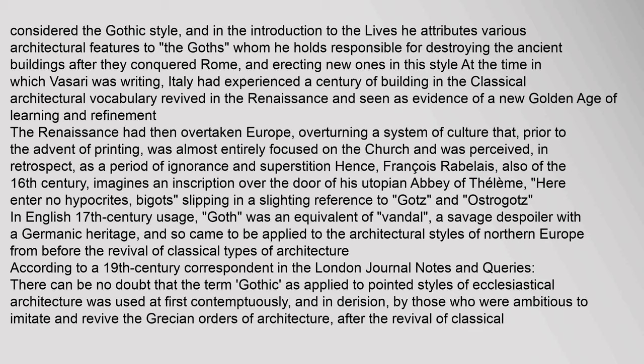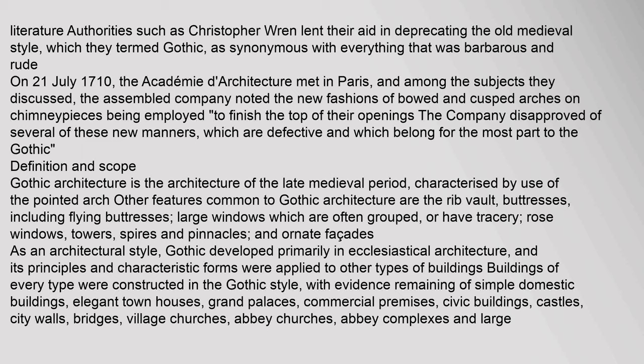In English 17th century usage, 'goth' was an equivalent of 'vandal' — a savage despoiler with a Germanic heritage — and so came to be applied to the architectural styles of Northern Europe from before the revival of classical types of architecture. According to a 19th century correspondent in the London Journal, the term Gothic as applied to pointed styles of ecclesiastical architecture was used at first contemptuously and in derision by those who were ambitious to imitate and revive the Grecian orders of architecture. Authorities such as Christopher Wren lent their aid in deprecating the old medieval style, which they termed Gothic as synonymous with everything that was barbarous and rude.